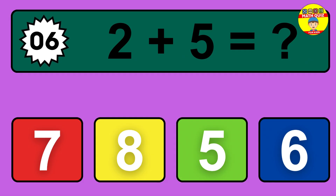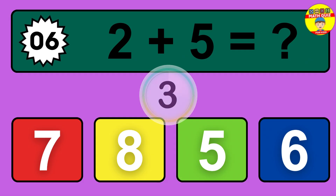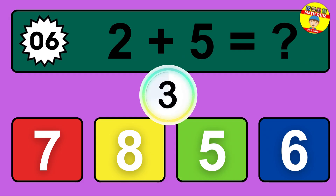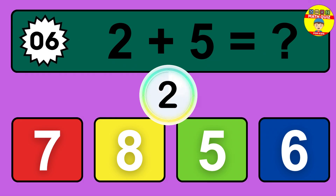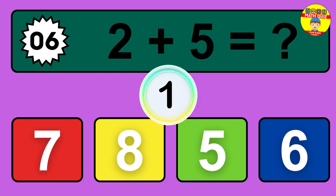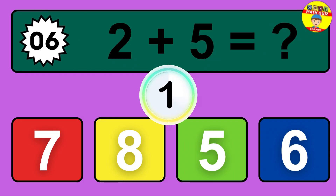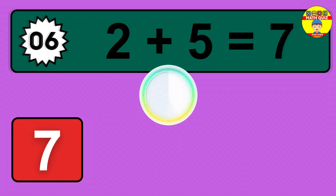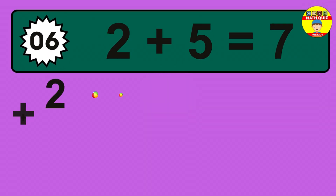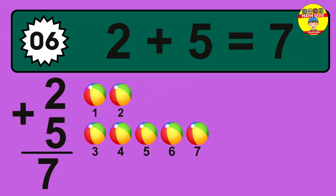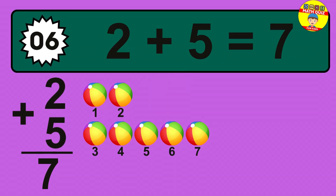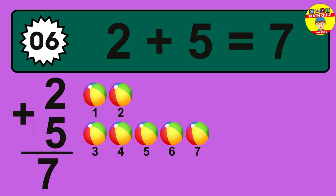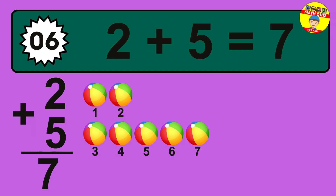Question 6. 2 plus 5 equals what? So the answer is 2 plus 5 is 7.